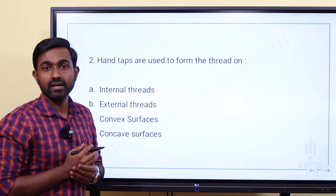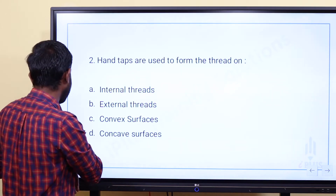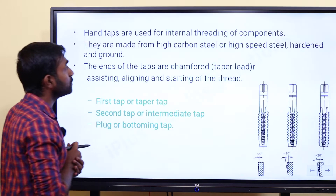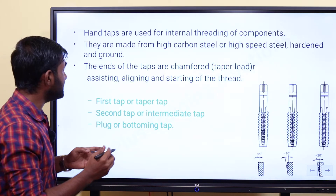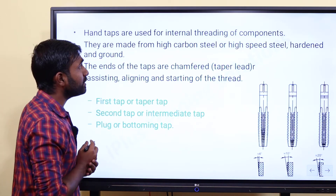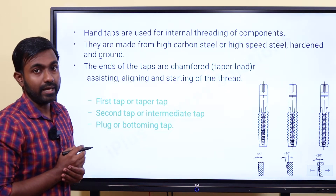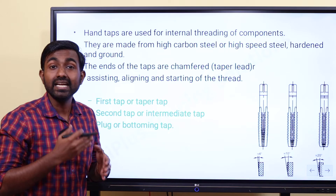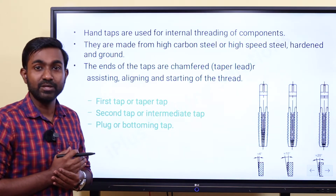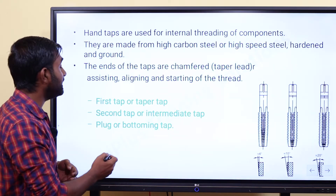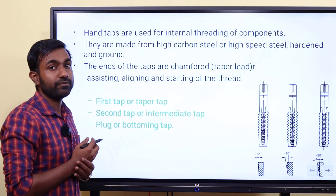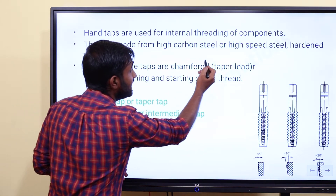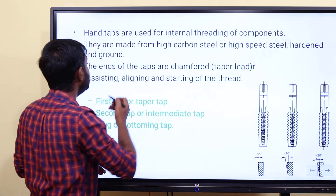The internal thread is used — option A is the answer. Hand Taps are used for internal threading of components. Hand Taps are used to form internal threads. Hand taps are made of carbon steel, high speed steel, or hardened and ground steel.